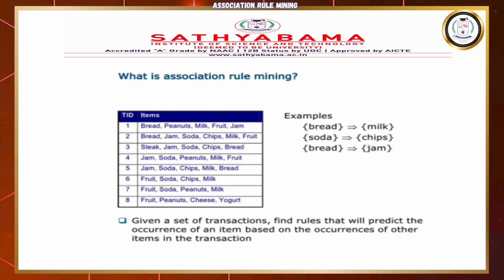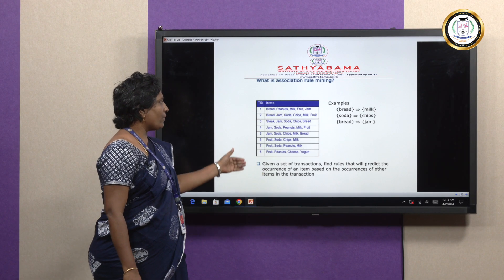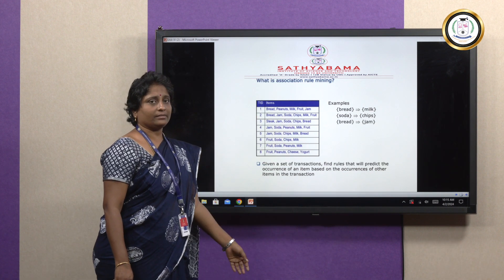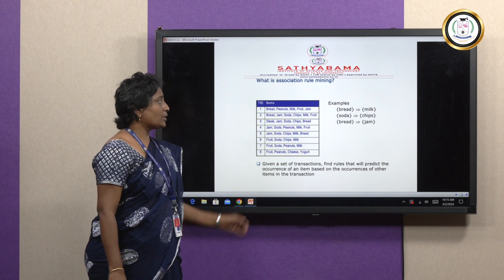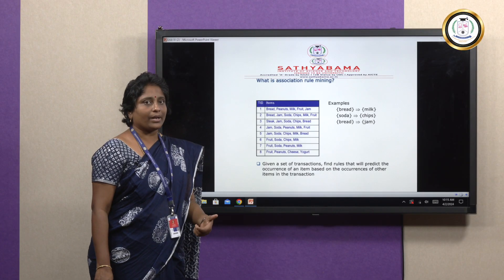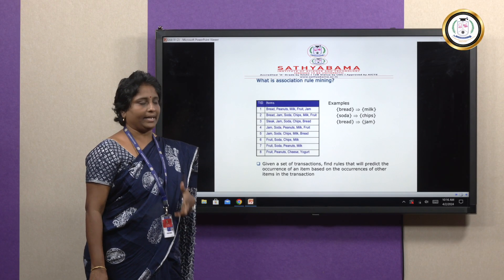Here is a scenario: these are transactions done in a supermarket over a period by a set of people. We are going to find how bread is related to milk, how soda is related to chips, how bread is related to jam. How we predict these relationships can be applied using the concept called association mining.